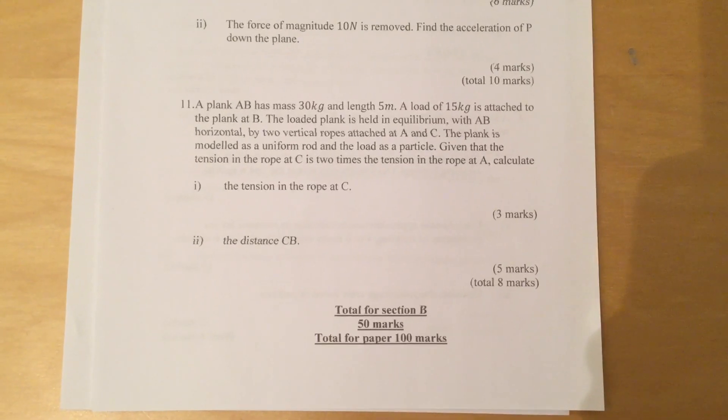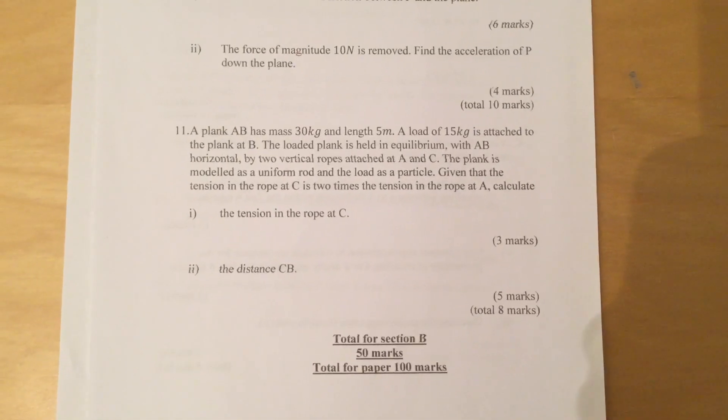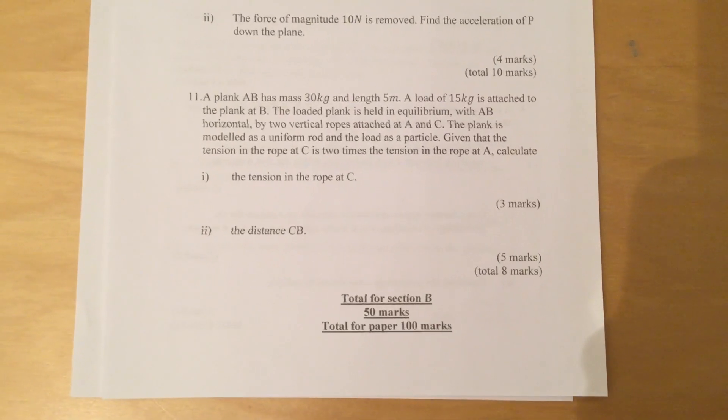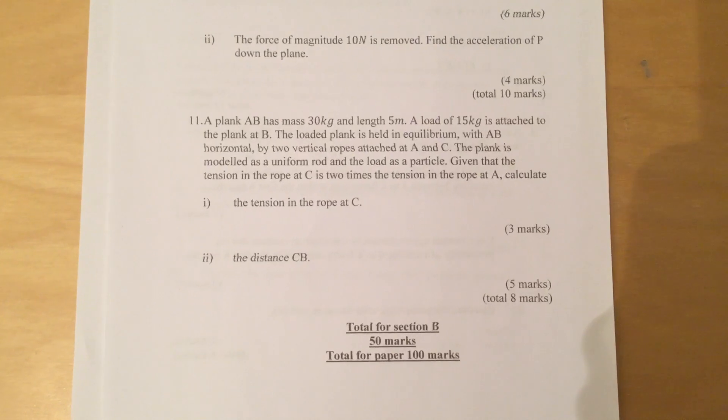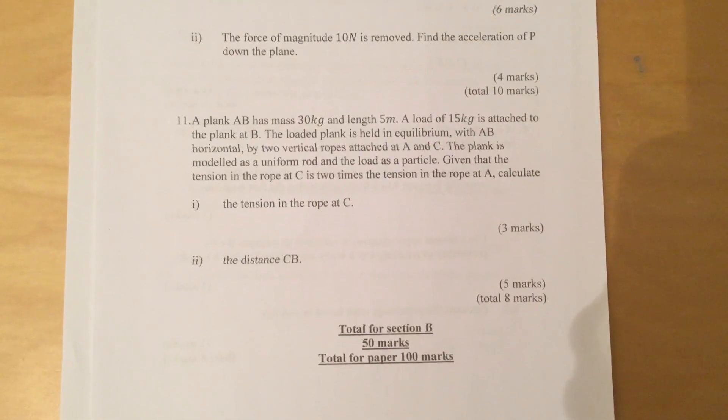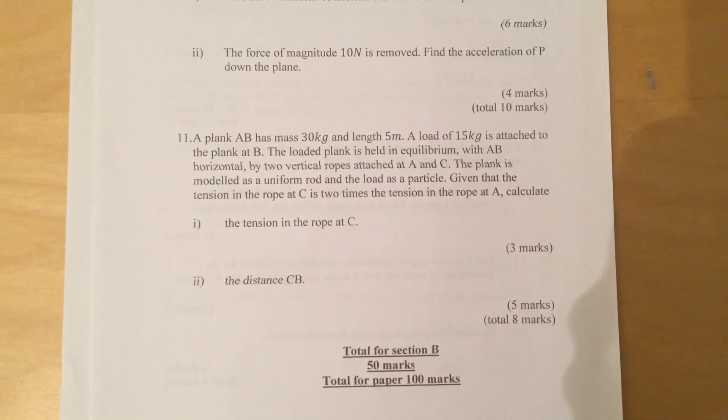The plank is modeled as a uniform rod and the load as a particle. Given that the tension in the rope at C is 2 times the tension in the rope at A, calculate part 1, the tension in the rope at C, and part 2, the distance CB.